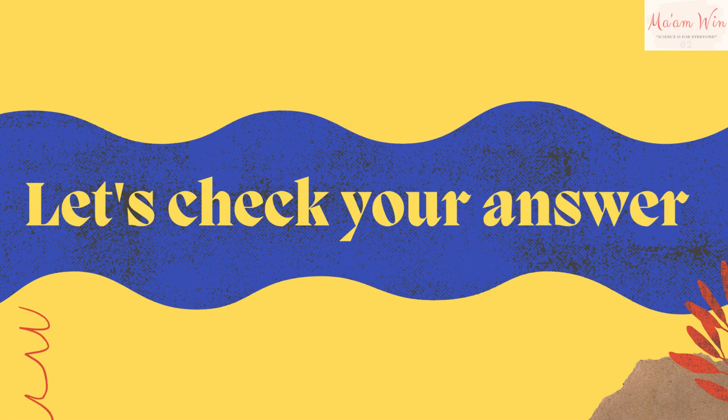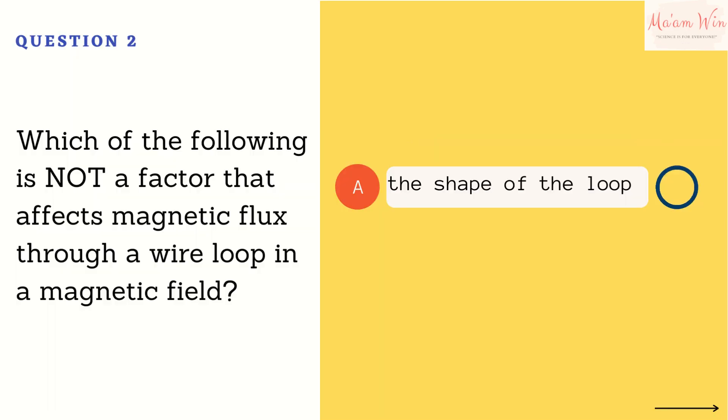Let's check your answer. The right answer is letter A, the shape of the loop.